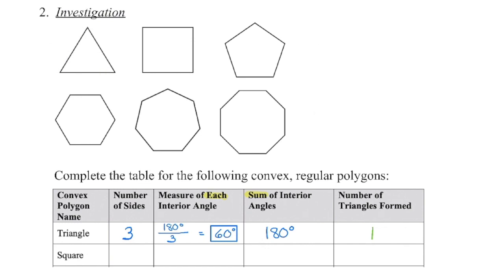A square is a regular quadrilateral with four sides, and there are 360 degrees inside a square. We can show this by breaking the square into triangles — drawing a diagonal from one corner to the other creates two triangles. Since each triangle contains 180 degrees, two triangles multiplied by 180 gives us 360 degrees.